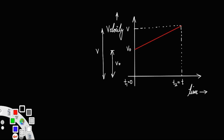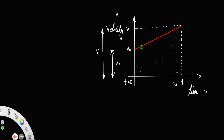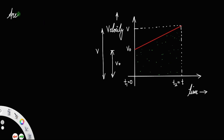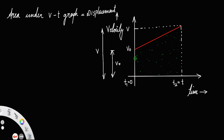Now we know the fact that the area under the velocity-time graph — that is, this whole area represented by the green-shaded region under the red line — gives the displacement of the body. So if we find this area, we get the displacement.